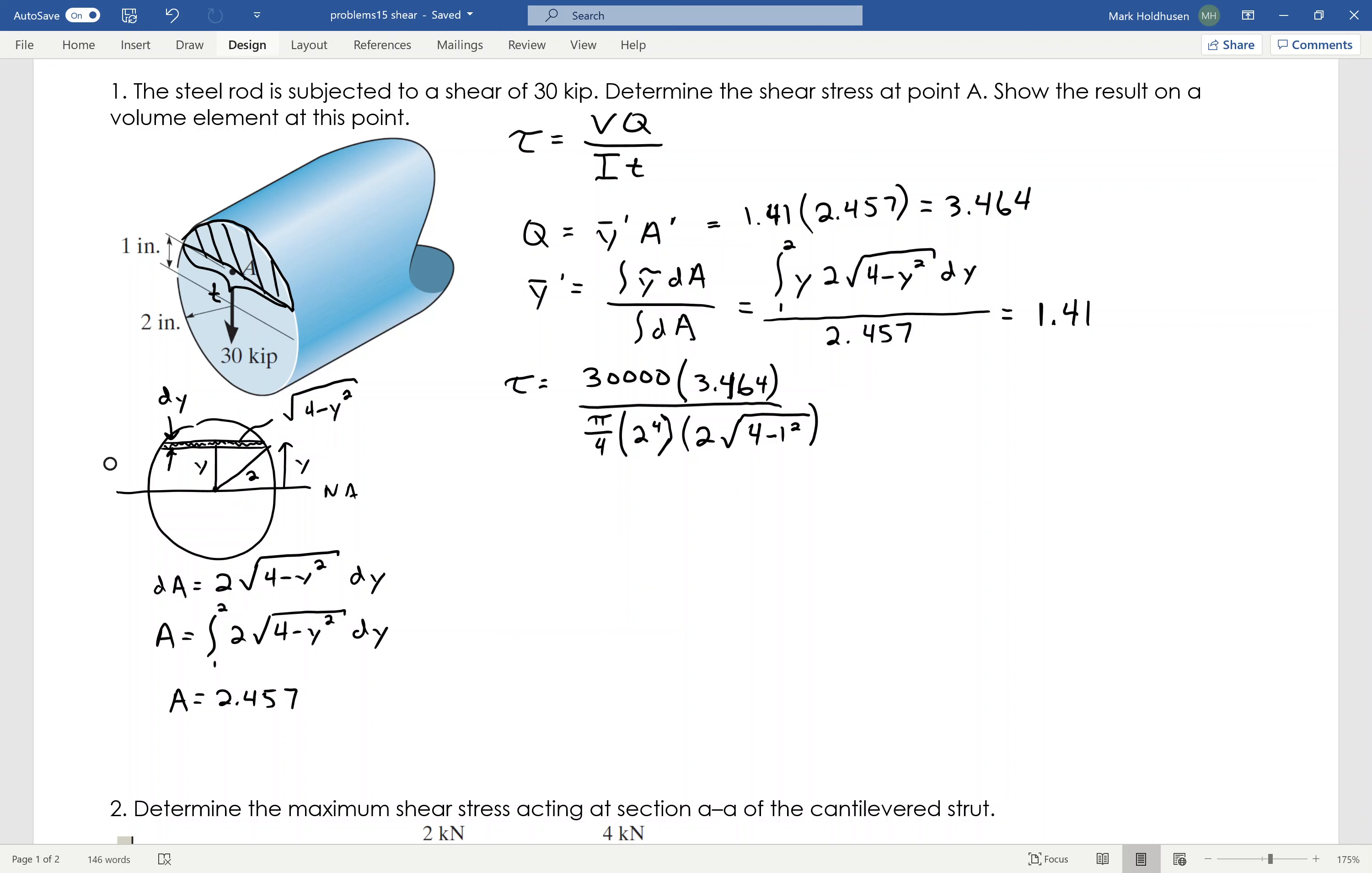So, plugging all of that in I can find that the shear stress at point A is 2.39 KSI. The trickiest part here is finding Q. And again, Q is at the point that it's located either above or below. I find the area, I find the centroid either above or below, multiply them together and that is what Q is in order to find the shear stress at that precise point.